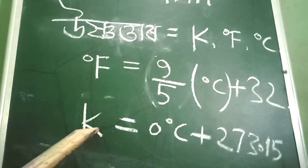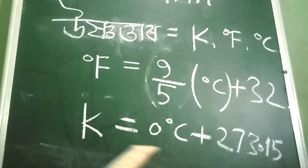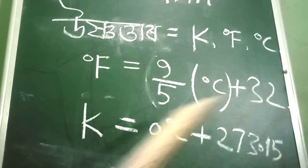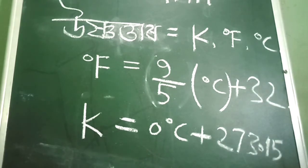And Kelvin is equal to degree Celsius plus 273.15.